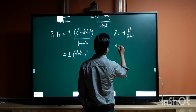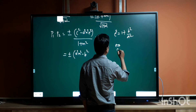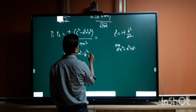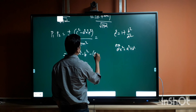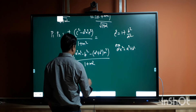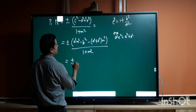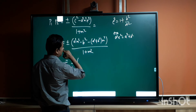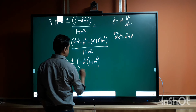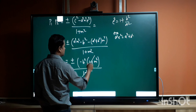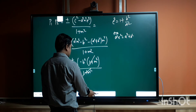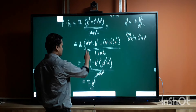Substituting a²e² = a² + b² in place of a²e², the numerator becomes c² - (a² + b²)m². Expanding with c² = a²m² - b², this gives a²m² - b² - a²m² - b²m². The a²m² terms cancel, leaving -b²(1 + m²) in the numerator, divided by (1 + m²) in the denominator. These cancel, and we get ±b². This proves that the product of the two perpendicular lengths from the foci to the tangent is ±b².